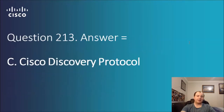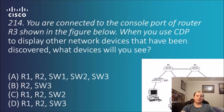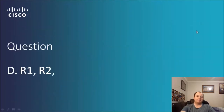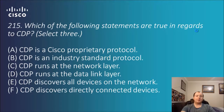The answer is the Cisco Discovery Protocol — a nice simple one to start us off. Question 2.14: you are connected to the console port of router R3 shown in the figure. When you use CDP to display other network devices that have been discovered, what devices will you see? Remember that CDP only shows directly connected devices. Looking at R3, what's directly connected? Switch 3, R1, and R2 — so the answer is D.